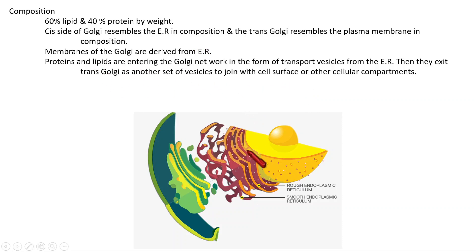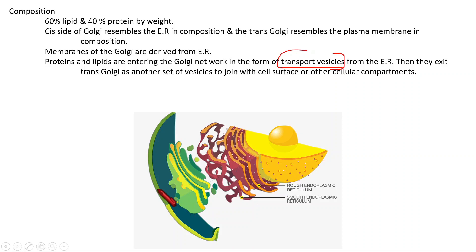Proteins and lipids enter the Golgi network from the endoplasmic reticulum in the form of transport vesicles. They exit through the trans Golgi, join with the plasma membrane, and can release their content to the outside. Sometimes, content from the trans Golgi is also transported to other cellular compartments like lysosomes and mitochondria.